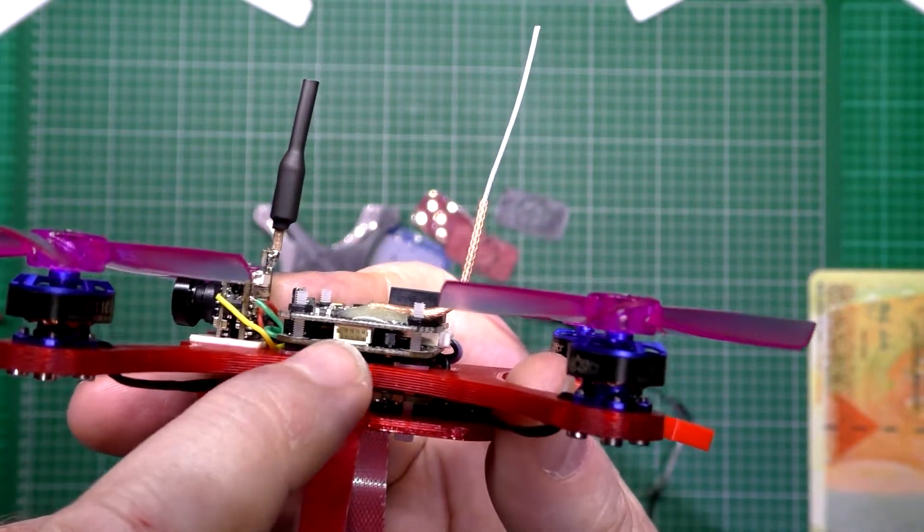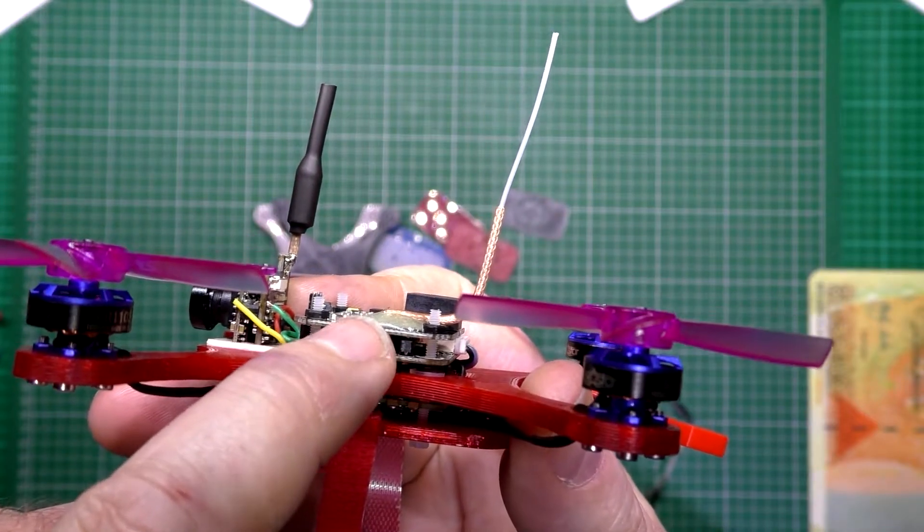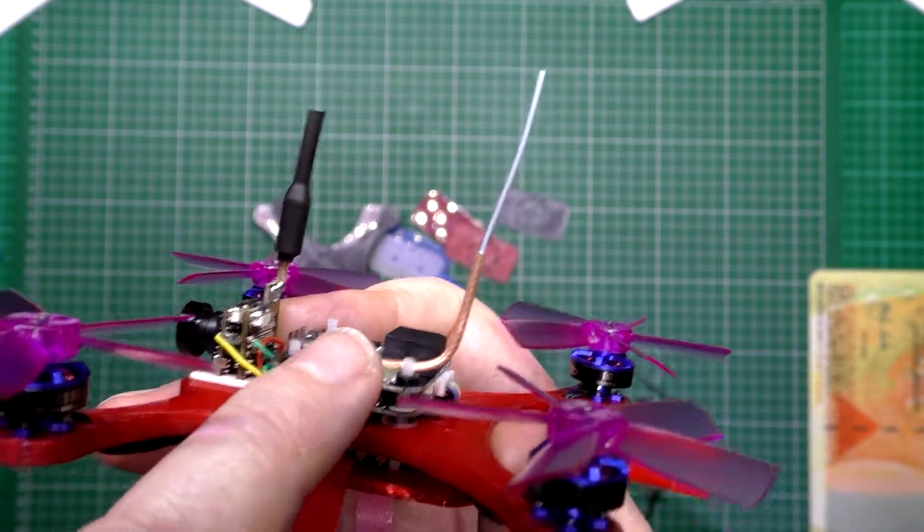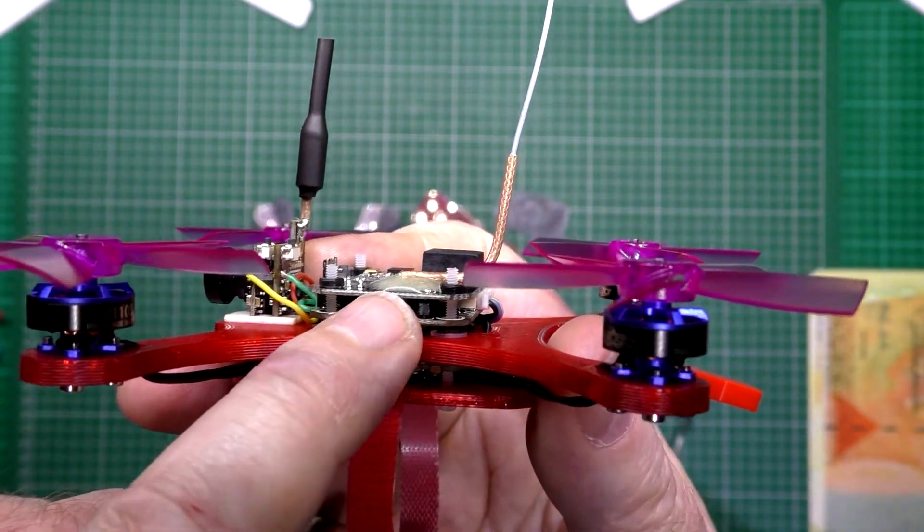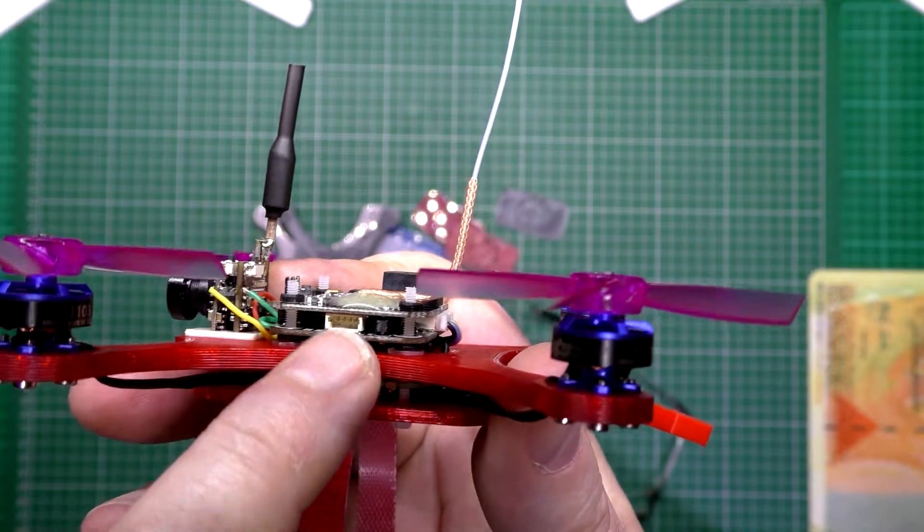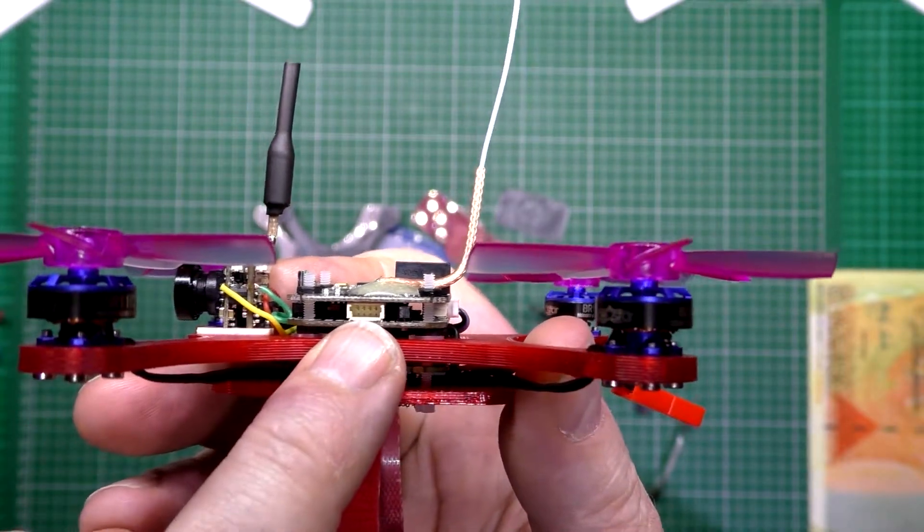Then we've got the flight controller and at the top there is the FreeSky receiver. When you're ordering it you can choose whichever one you want: DSMX, Blast, Spectrum, whatever. So I've gone with the FreeSky because I've got FreeSky stuff.